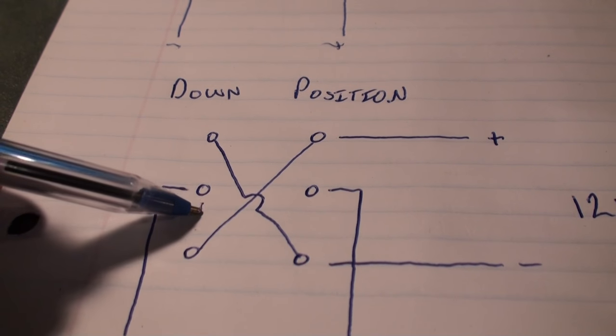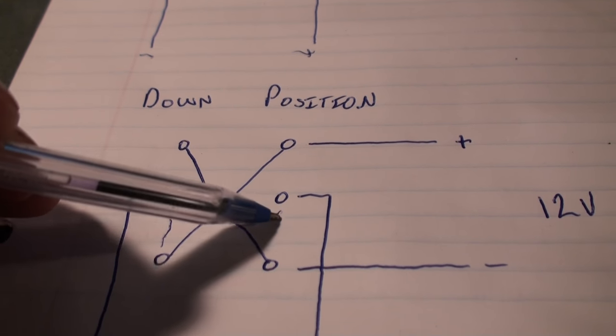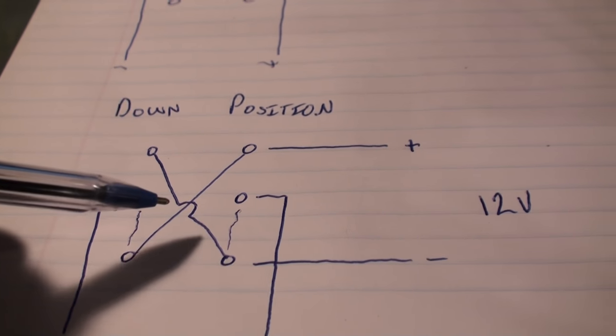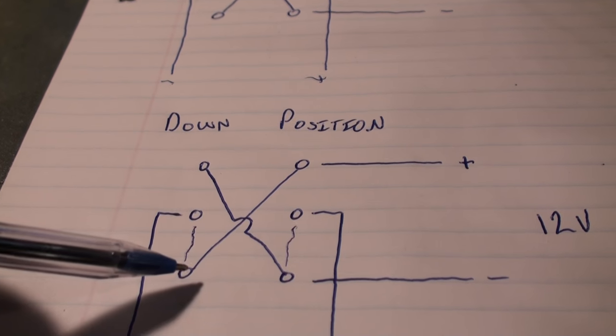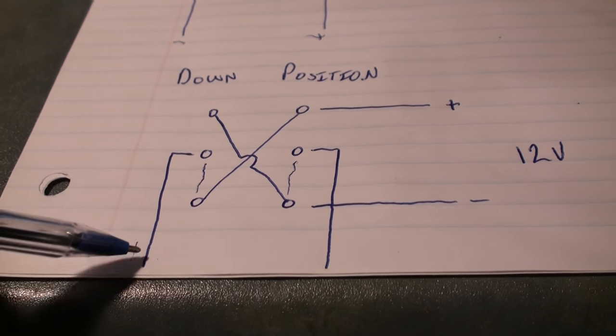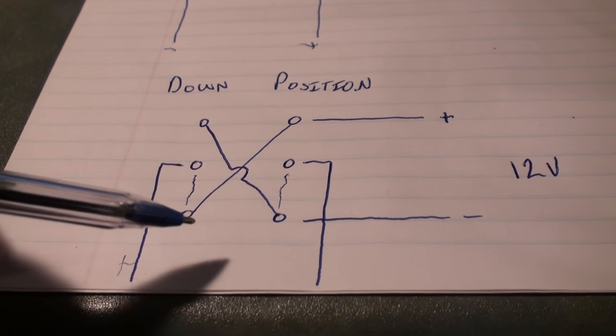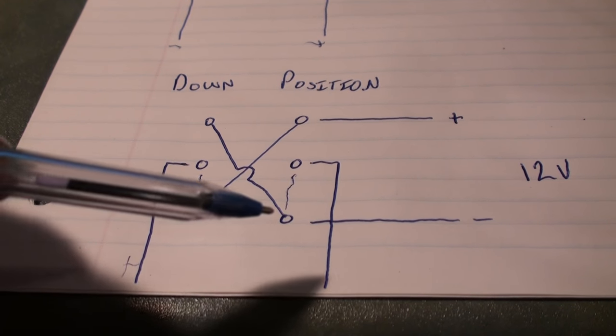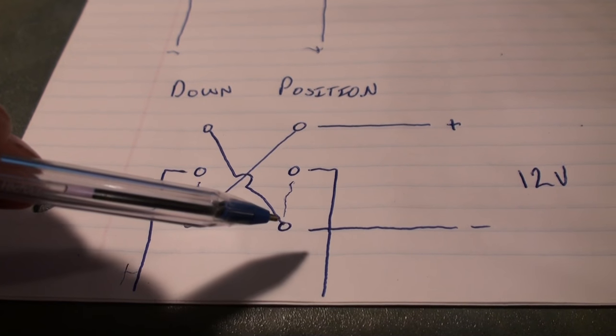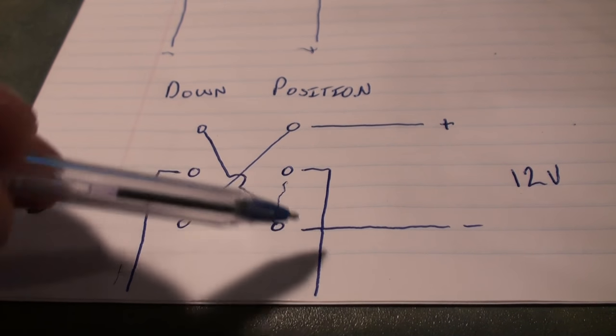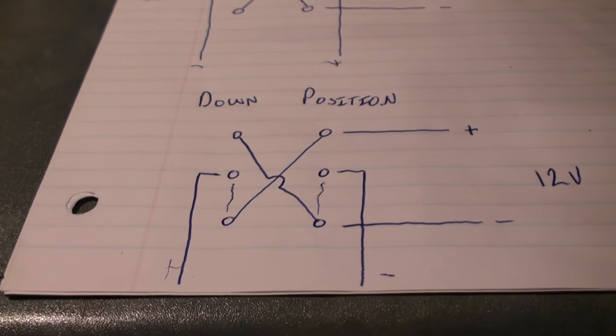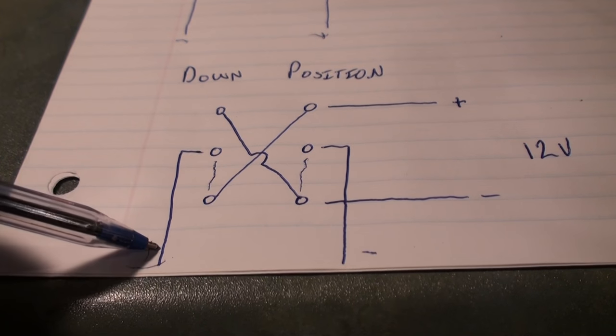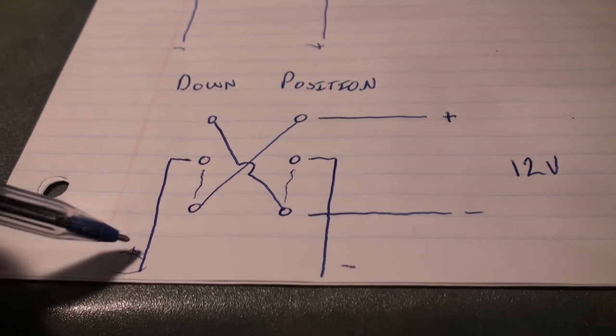We also have the down position, let's see what happens when we connect these contacts together in the down position. Now, we have our positive coming in here, scoots across to this contact and out this way. So that makes this side positive. And the negative comes in through this side up here, which makes this side negative. So it's kind of a clever way of reversing polarities momentarily. Pretty interesting.